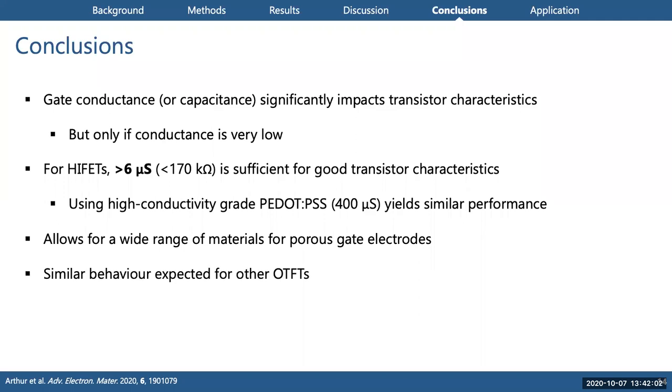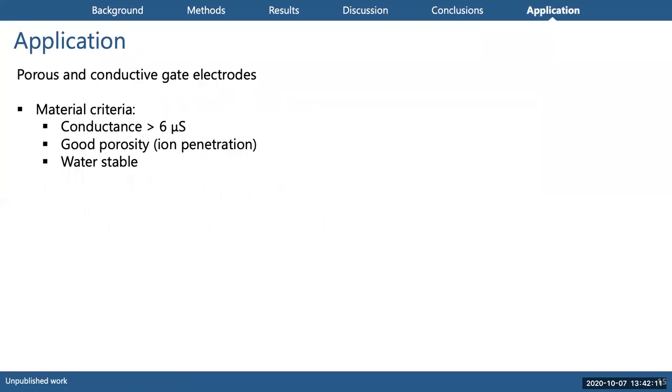We were able to confirm this by testing with a very high conductivity grade PEDOT:PSS and we found no further performance gain, so it essentially behaves the same as the lower conductivity PEDOT:PSS. For us, the important lesson is that we don't necessarily need to use very highly conductive materials for the gate electrode, which potentially allows us to use a wide range of different materials for the fabrication of a porous electrode for our sensing applications. As for other OTFT architectures, we do expect some similar behavior to occur, but the details would require further investigation and may depend on the device mechanisms.